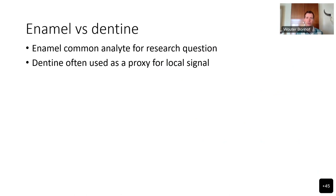The common practice for strontium isotope analyses is to analyze enamel, whereas dentine is very often used as a proxy to determine the local signal or local range in strontium isotope ratios against which the enamel can then be compared. If there's agreement, it shows the individual or animal probably grew up locally, whereas disagreement gives reason to suspect migration.